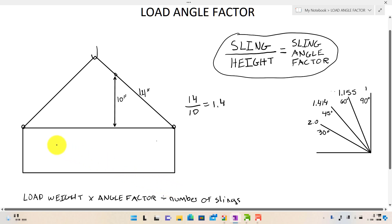So let's just say the load weight is 5,000 pounds. Multiply that by 1.4, which equals 7,000 pounds. So we'll just take that 5,000 multiplied by the angle factor, which is 1.4. That's going to equal 7,000. Then you simply divide that by the number of slings, which equals 3,500 pounds.